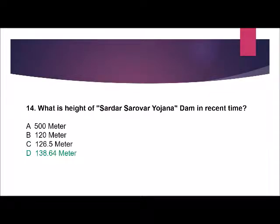Question number 14: What is the height of the Sardar Sarovar Yojana Dam at present? Options are: 500 meters, 120 meters, 126.5 meters, or 138.64 meters. The correct answer is 138.64 meters.